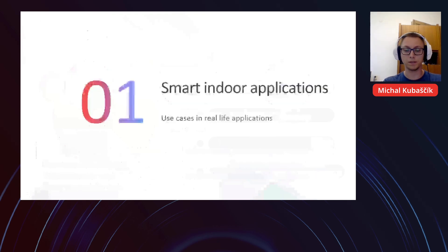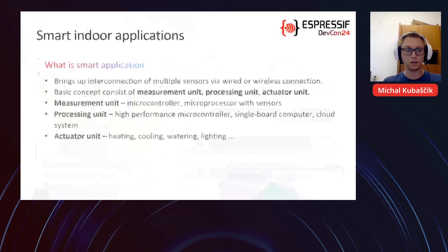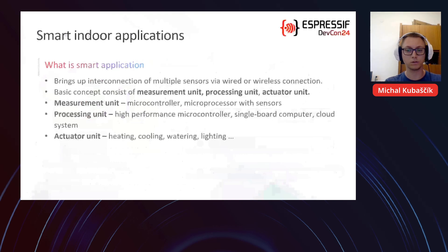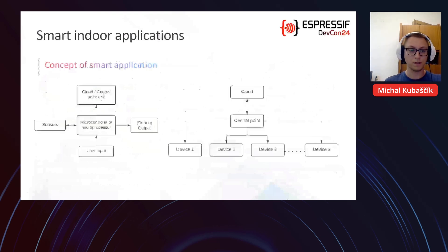Let's talk about some smart indoor applications. Smart applications bring up interconnection of multiple sensors via wired or wireless connection. A basic concept of a smart application consists of some measurement unit, some processing unit, and some actuator unit. The measurement unit consists of some microcontroller or microprocessor with connected sensors. The processing unit is mostly some high-performance microcontroller or single-board computer, maybe some cloud system. The actuator unit can be heating, cooling, watering, and so on.